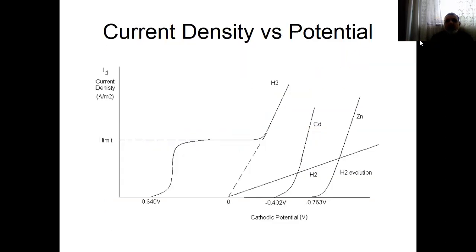And the current density — here you know, the cathodic potential. The cathodic potential: copper at about 0.40 volts. And when we look at zero point, the reduction of hydrogen, reduction of cadmium, and reduction of zinc.